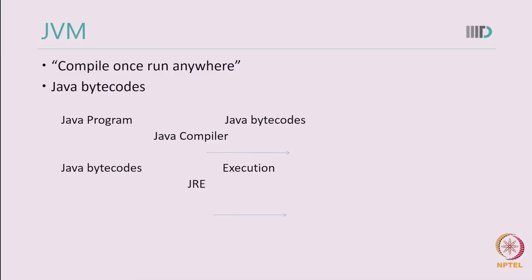Java has the catchphrase 'compile once, run anywhere.' Whenever you write a Java program, the Java compiler converts it into Java byte code, and those byte codes are ready for execution on different platforms using the JRE. As a programmer, you need not worry about what platform your Java program will run on. This is unlike C++, where the behavior of a program may differ from one platform to another.